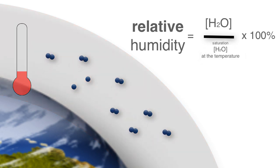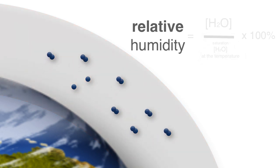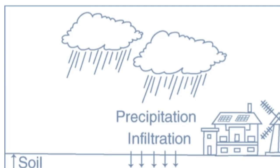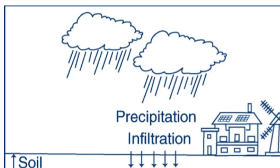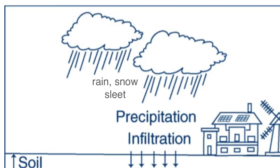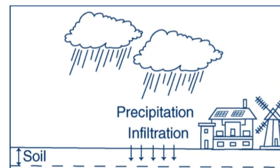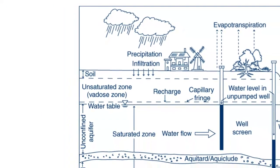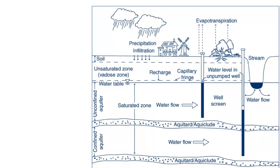When the temperature drops sufficiently to cause the water concentration to exceed the saturation limit of water in air, water will do one of two things: either condense to small liquid or ice particles, which we recognize as clouds, or precipitate out of the air. It is this precipitation of water from the atmosphere that refills our natural freshwater reservoirs.